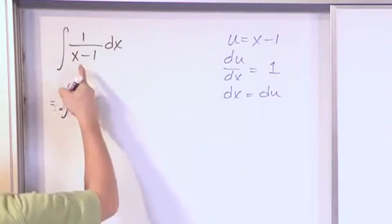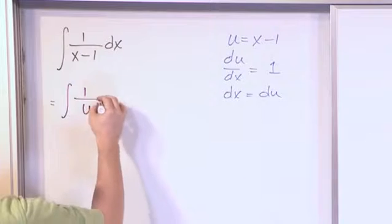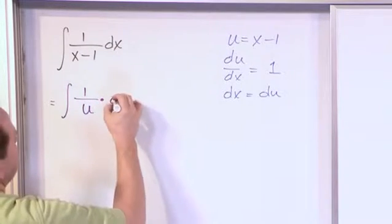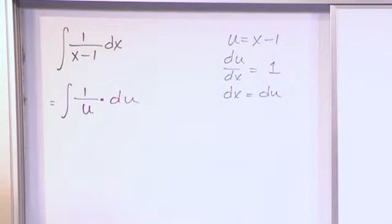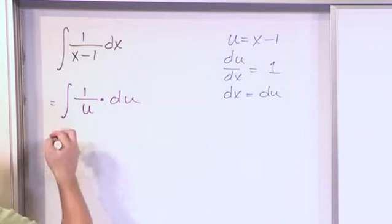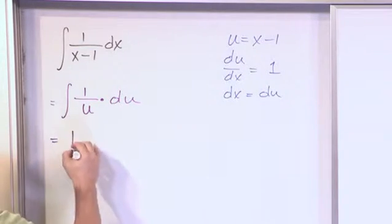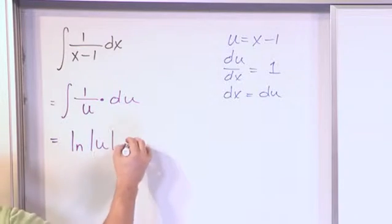So then we have enough information to go ahead and substitute in. So we'll have the integral of 1 over, this we define to be u, dx is just du. So it's a very simple substitution that we can do. And the integral of 1 over u, what is the answer to that? It's the natural logarithm of u plus a constant.